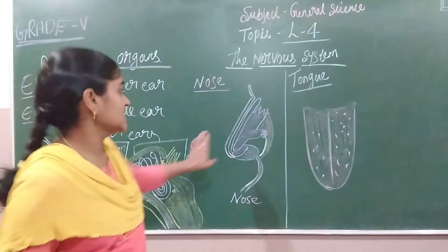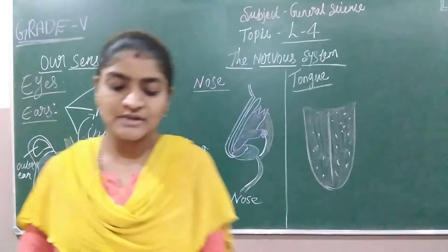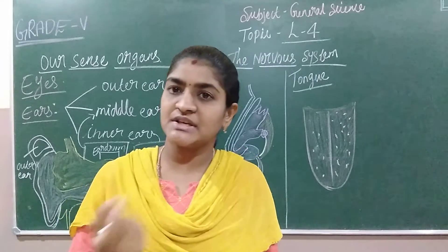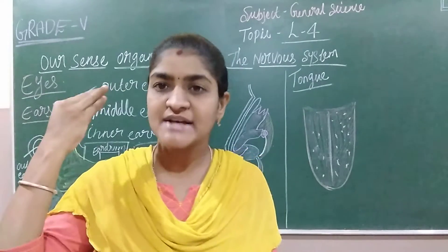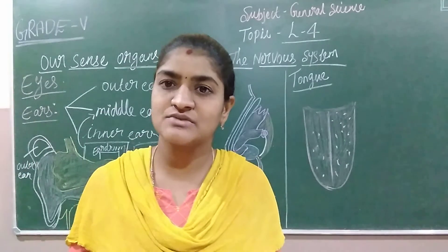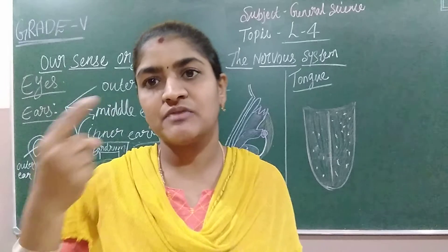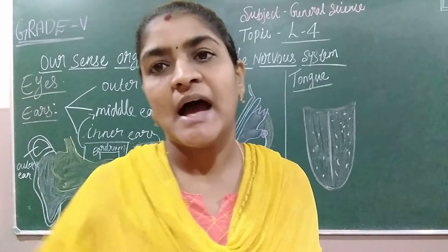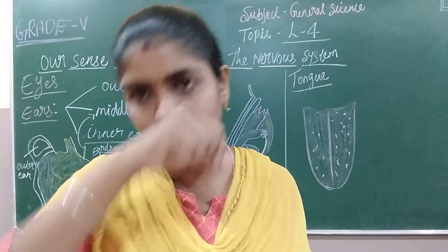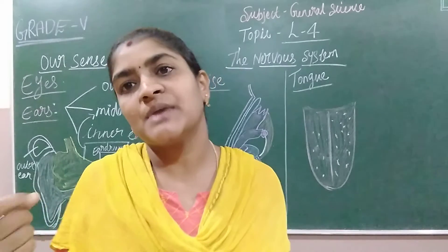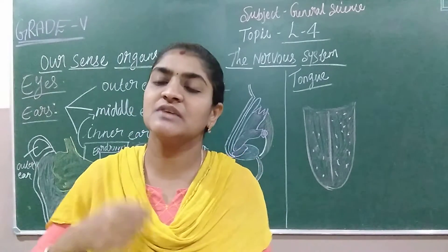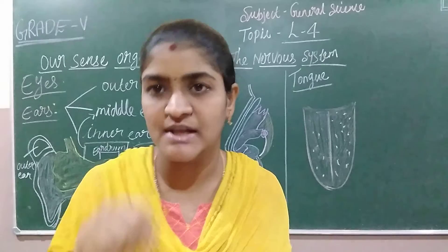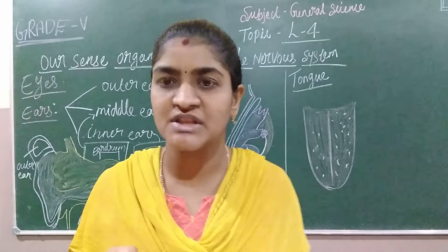The next sense organ we are going to see is the nose. With the help of the nose, we can smell and also breathe. Air passes in and out of the nose. The nose is helpful to identify smells — for example, passing by drainage gives a stinking smell, while smelling jasmine flowers gives a nice fragrance. The nose is also helpful for the breathing process.